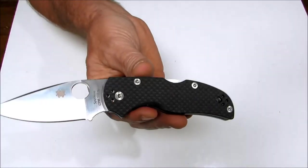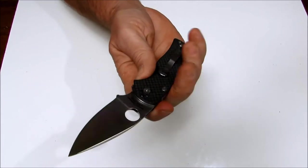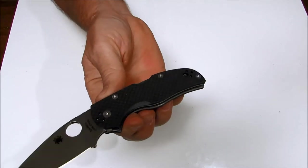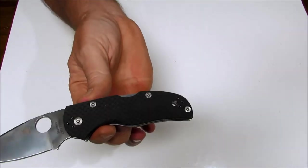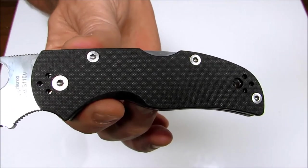Usually carbon fiber scales tend to be shiny, but this has a nice texturing on it like you'd find on a G10 scale, and it has a subtle carbon fiber weave pattern. Let's get a better look at that carbon fiber.